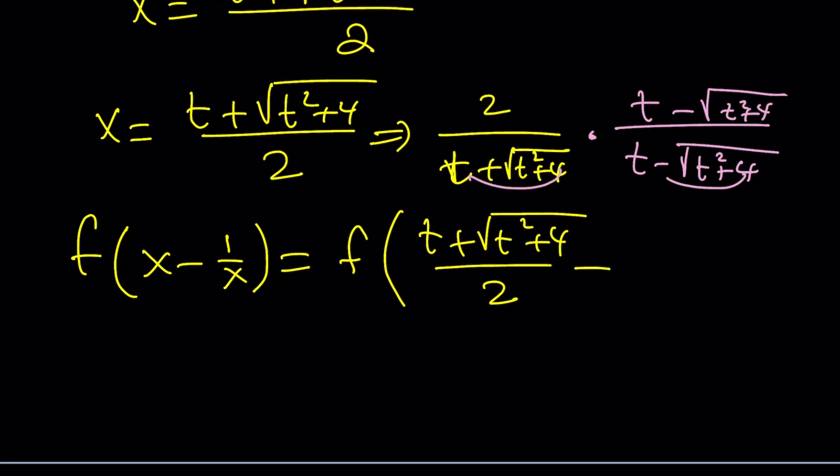Now, when you multiply these two things from difference of two squares, you should be getting t squared minus t squared plus 4, which is going to give you a negative 4, right? So, these are going to cancel out. That's going to leave a negative 2 at the bottom. So, that means we can basically write this, but we kind of have to switch these around like this and divide by 2. Make sense? That's going to be my 1 over x.